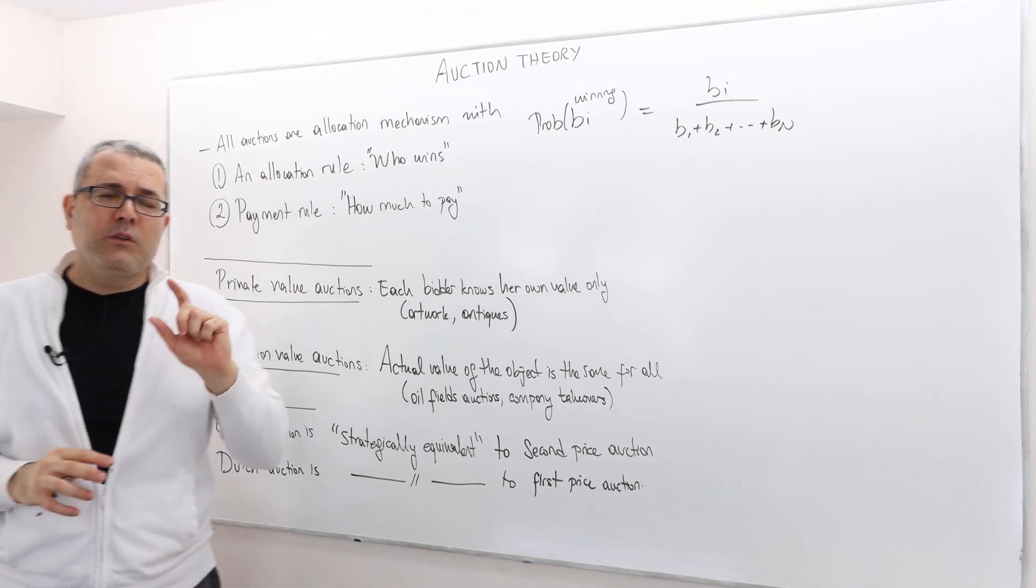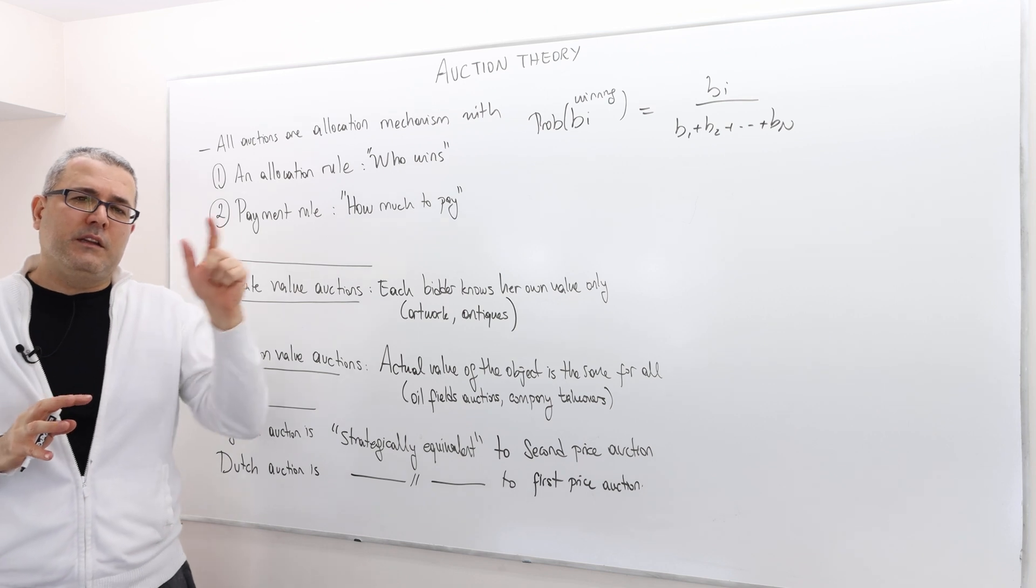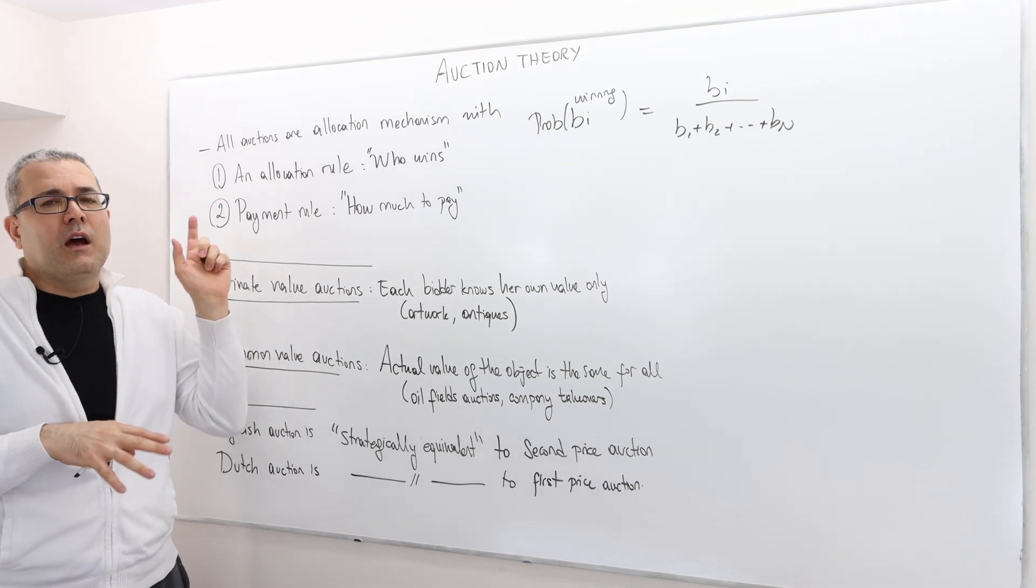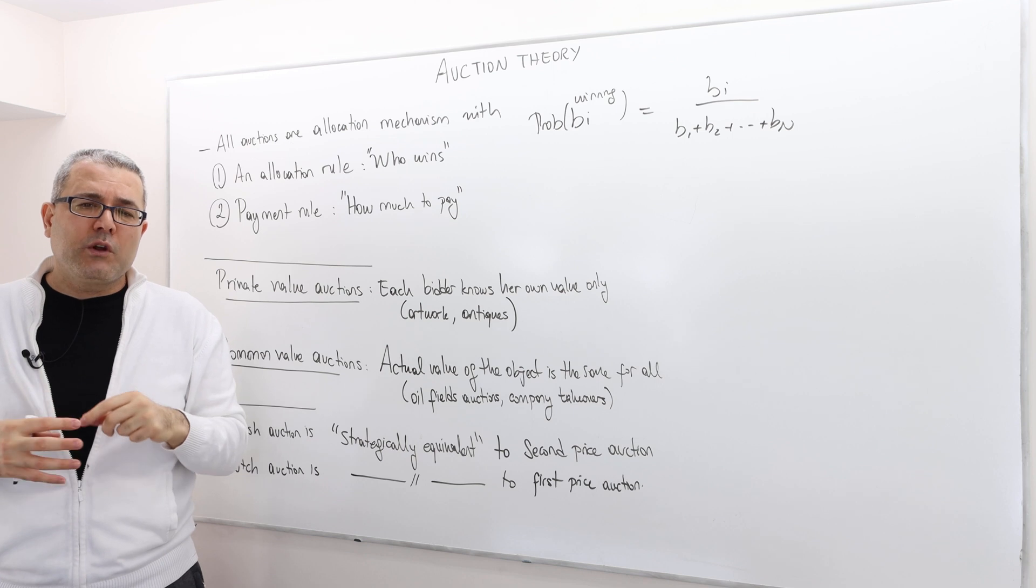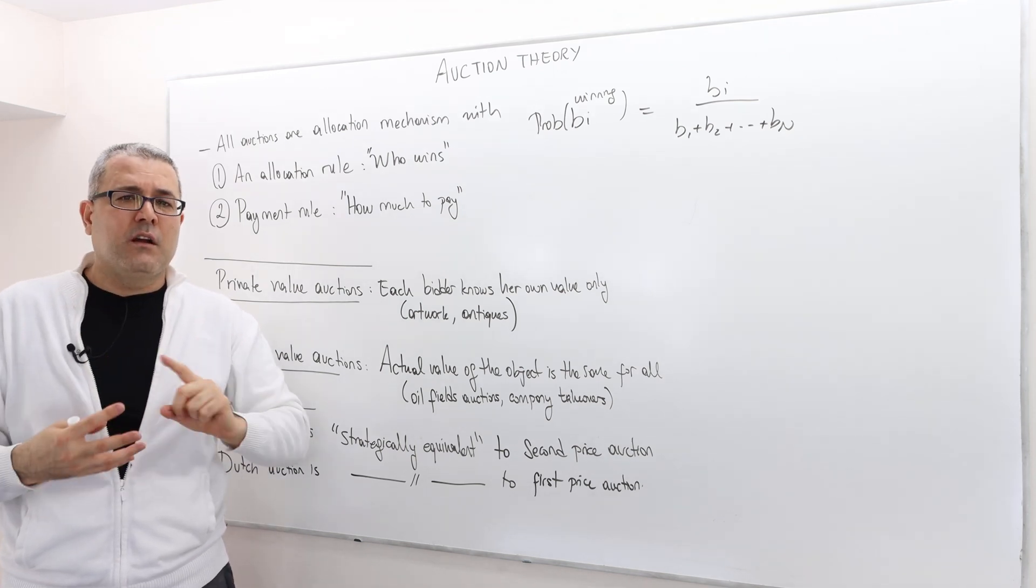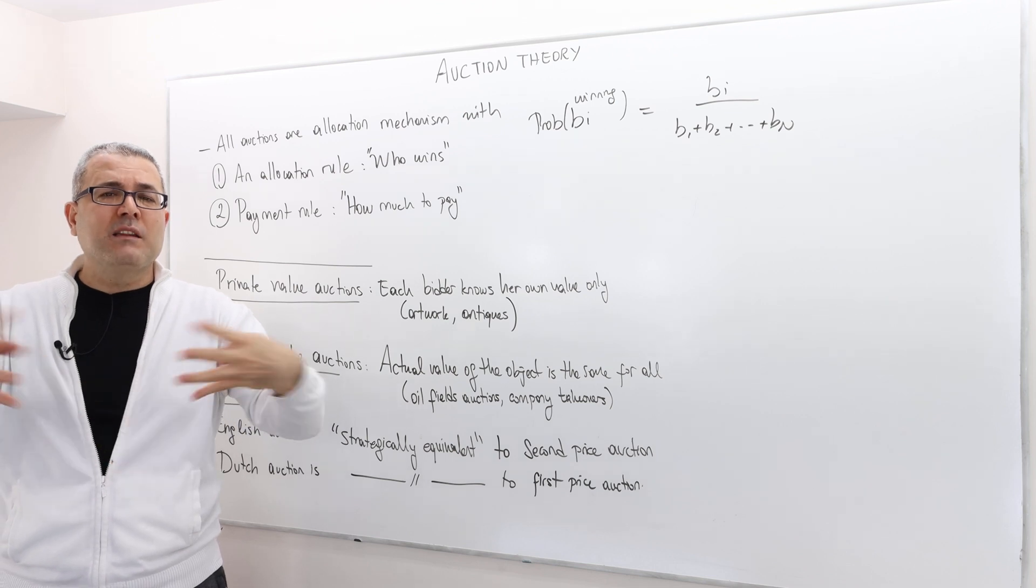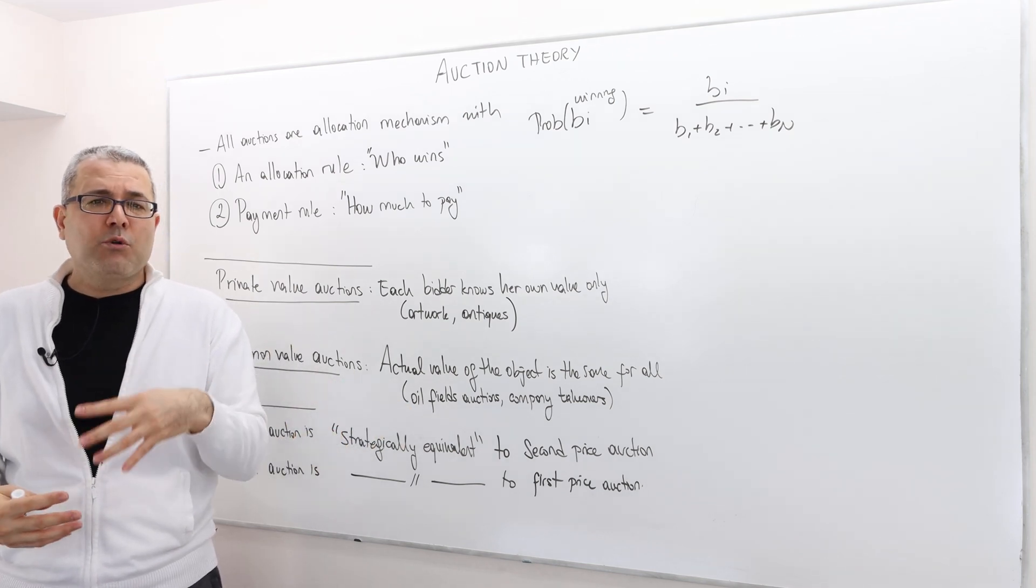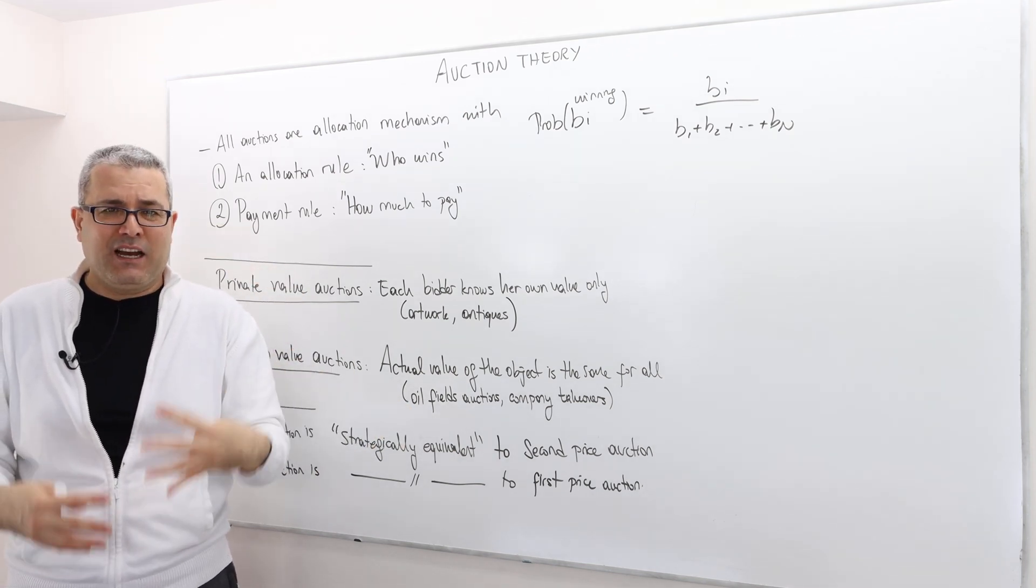Well, by the way, I am going to give the formal model in the next episode. But in this chapter, we talk about auctions where there's only one single object that is auctioned. So we're not auctioning multiple objects at the same time. We're auctioning only one item at a time.